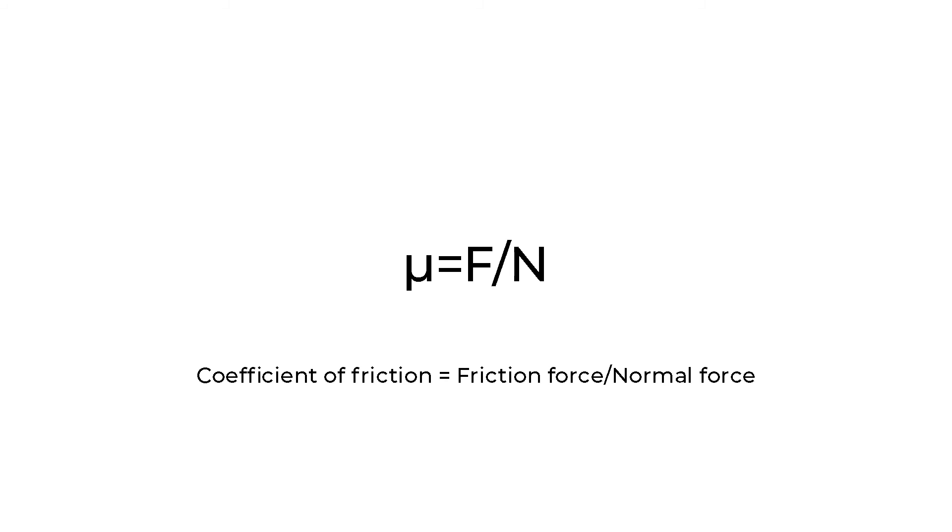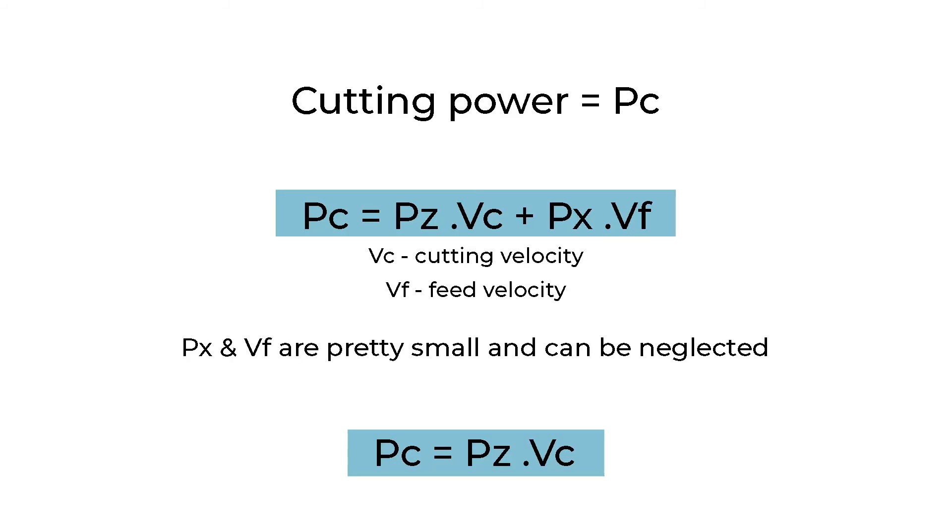Cutting power consumption Pc can be determined from Pc equals Pz into Vc plus Px into Vf. Here Vc is the cutting velocity and Vf is the feed velocity. Now Px and Vf are pretty small and they can be neglected, so power consumption is Pc equals Pz into Vc.